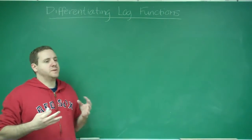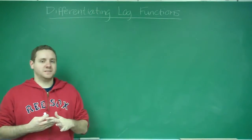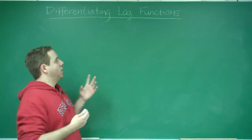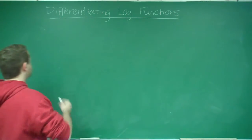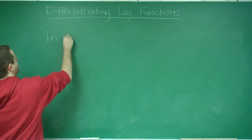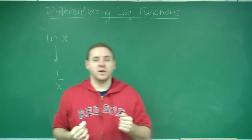Just like with your exponential functions, the easier derivative was with e to the x, because that was always itself. Similarly with logarithmic functions, the natural log is going to be the simpler one. The derivative of ln(x) is going to be 1 over x.